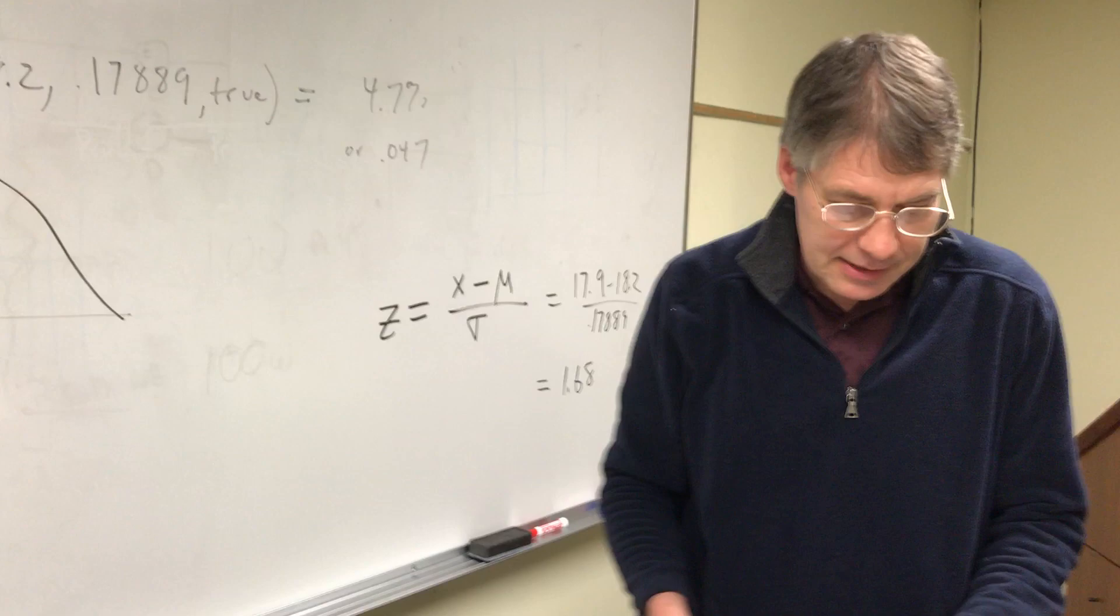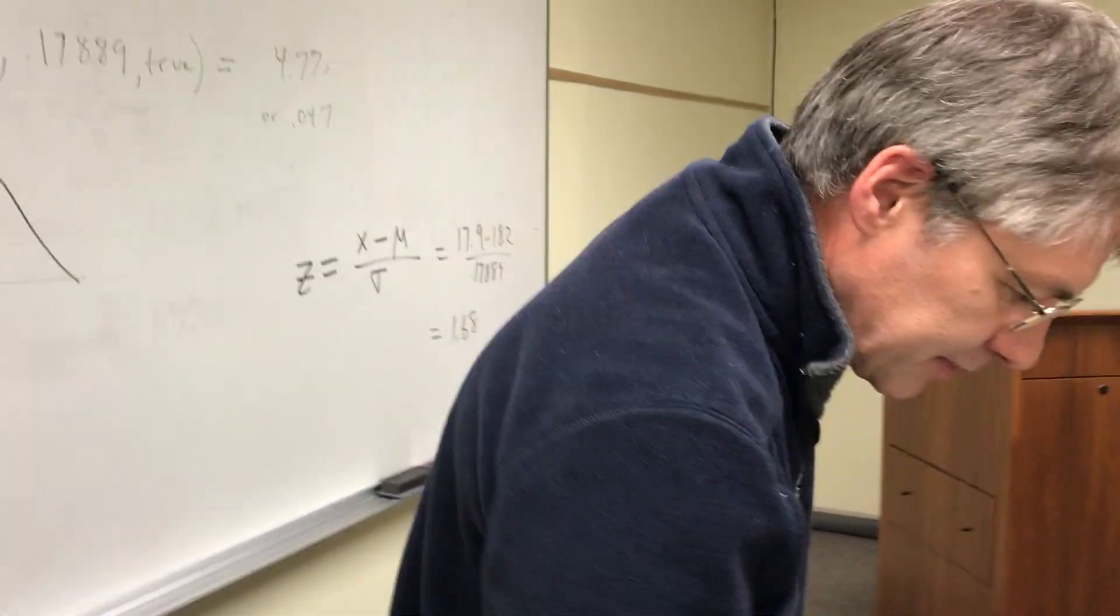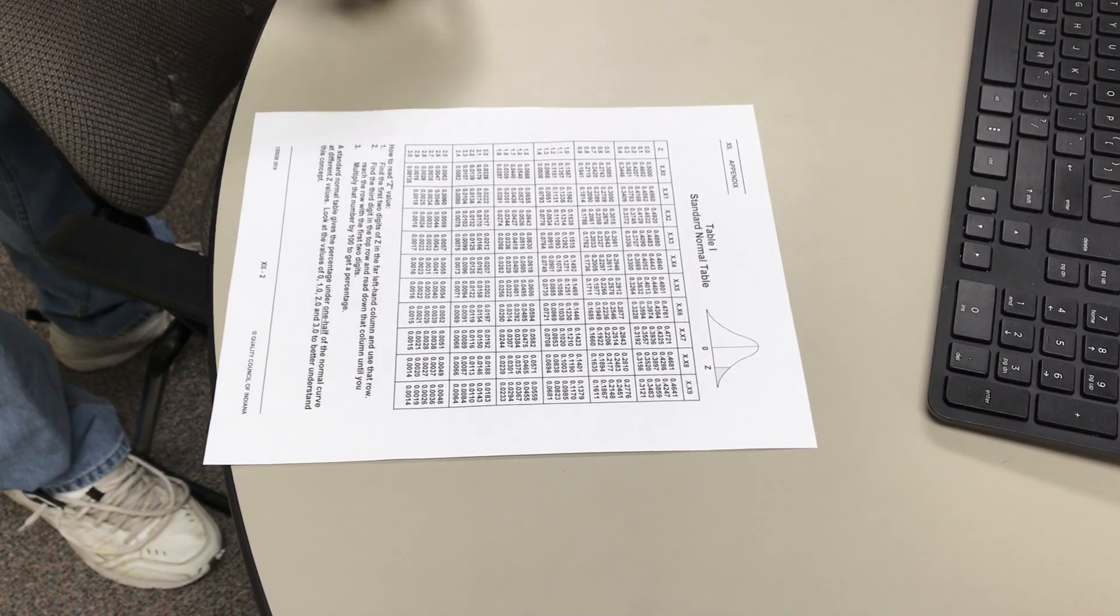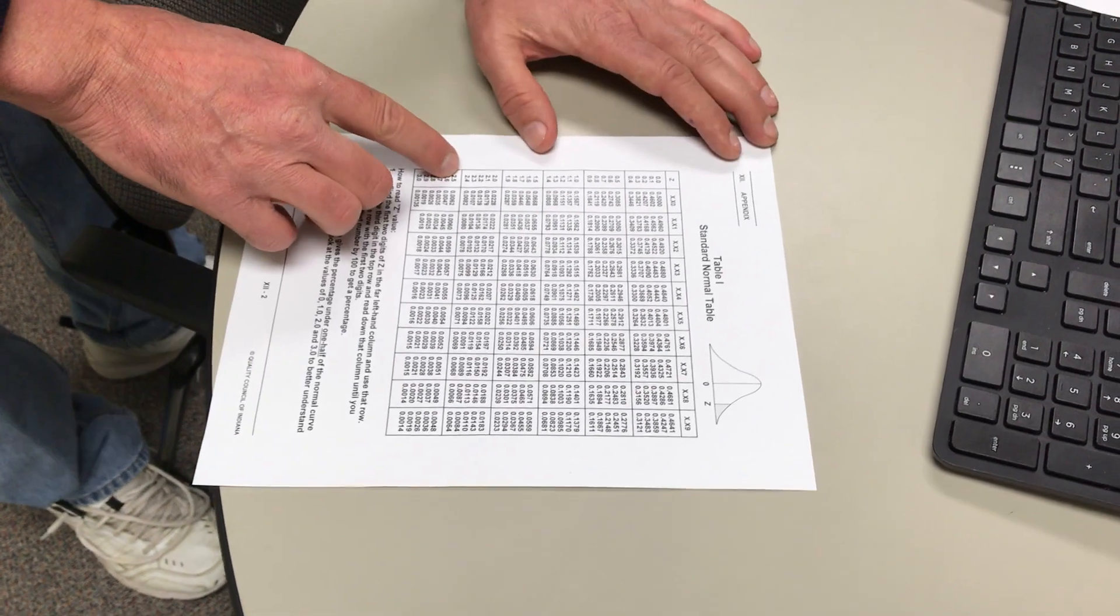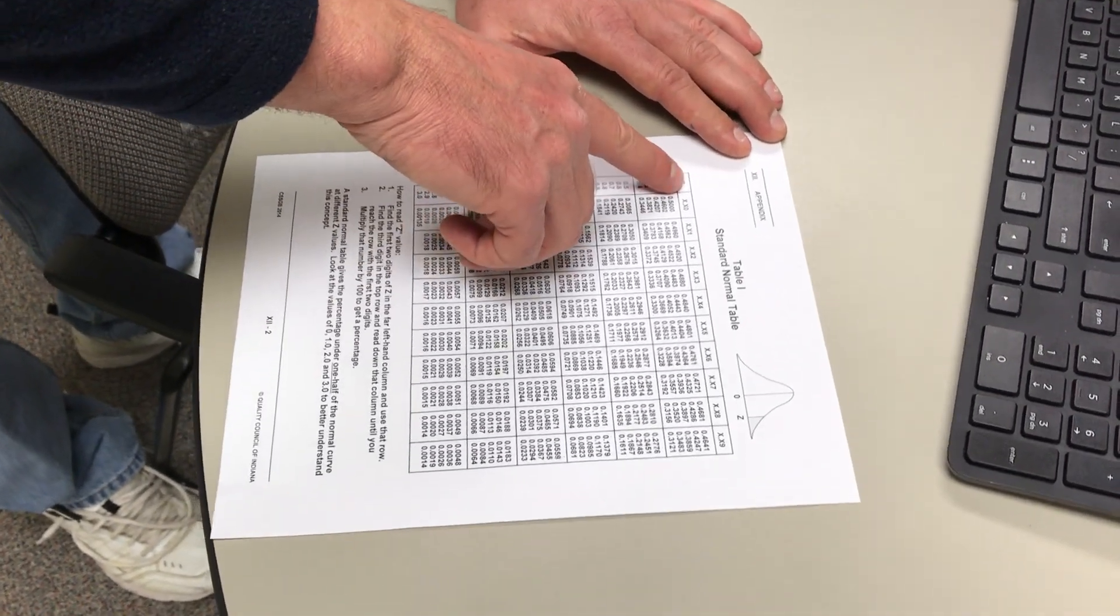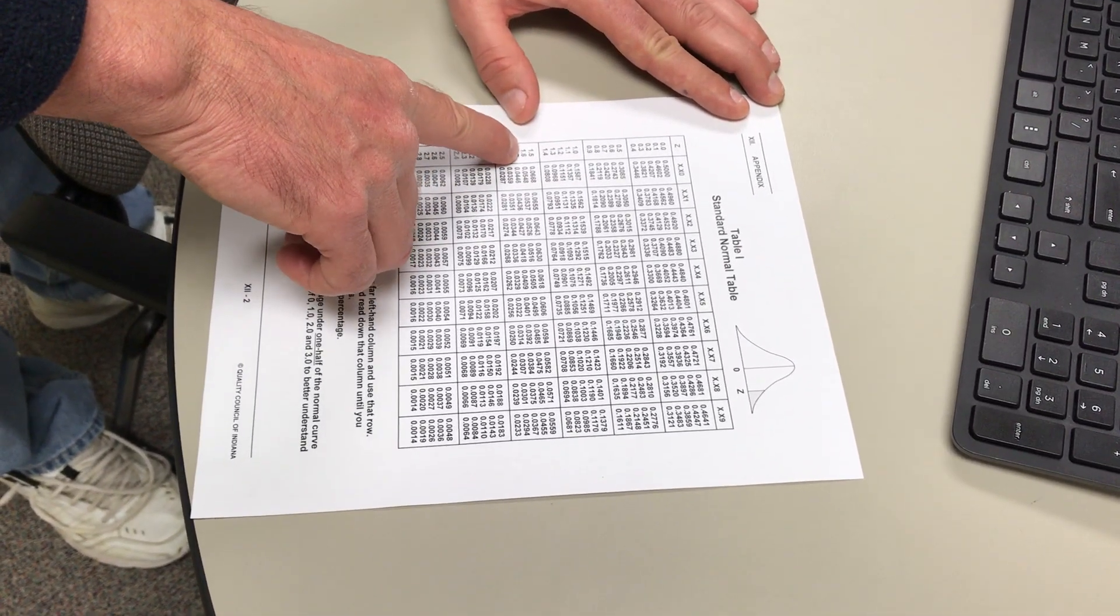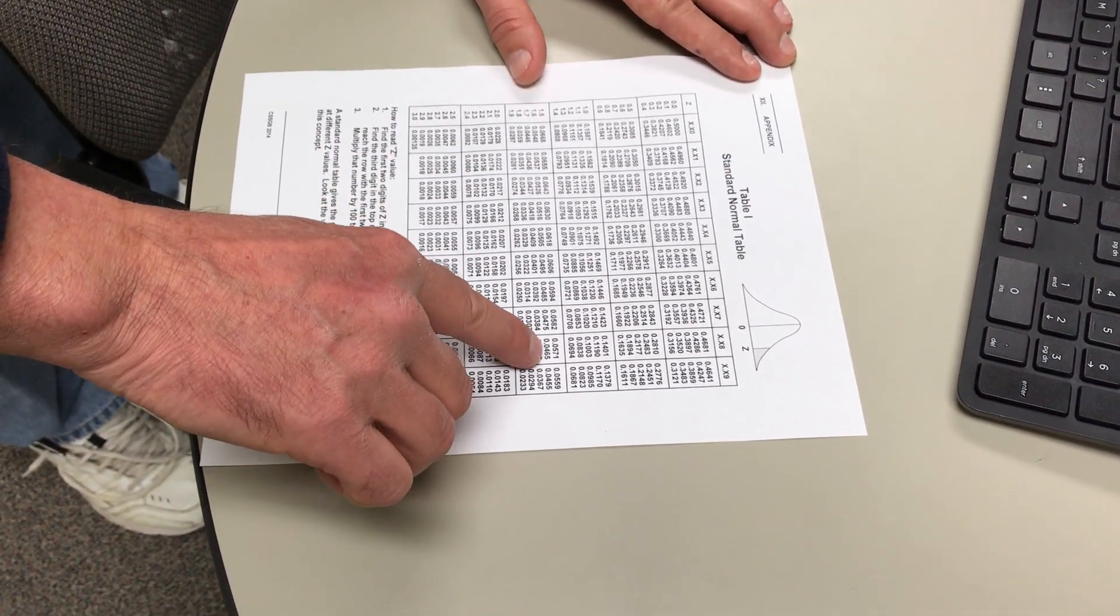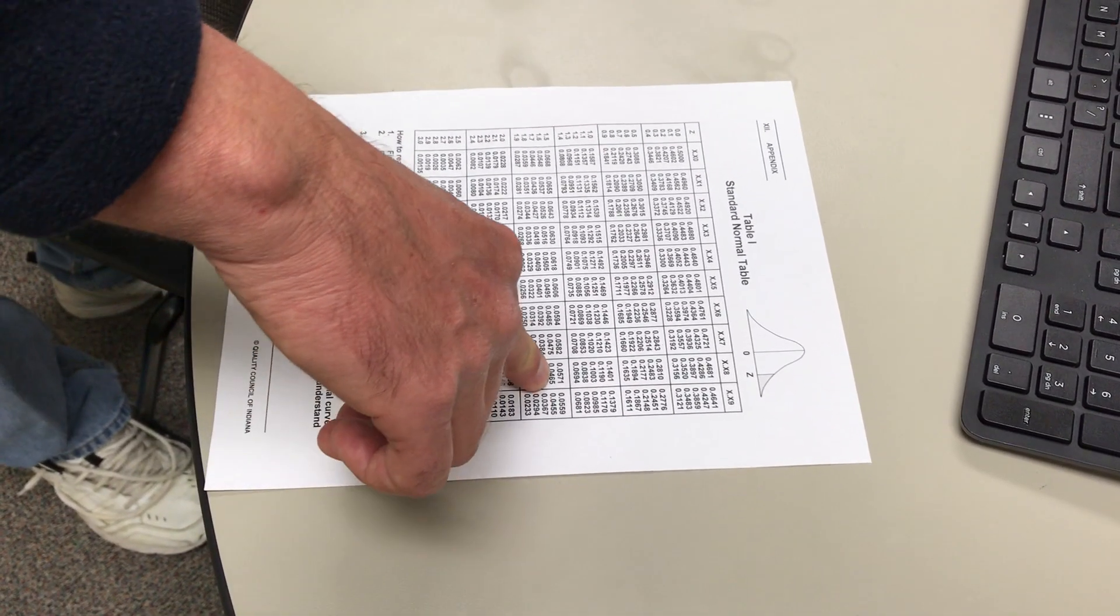Now the way I do that is, I'm going to switch over here to the table. I got this thing called the standard normal table. What I did is I just calculated the z, and this works like an old battleship game. So I got 1.6. I need that third number, 8. Where those two intersected, you get 4.65 or 4.7.